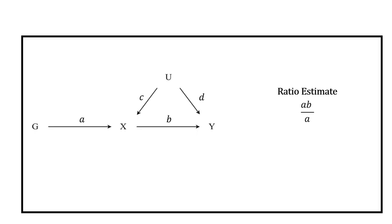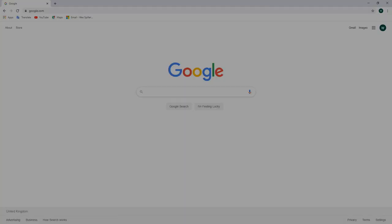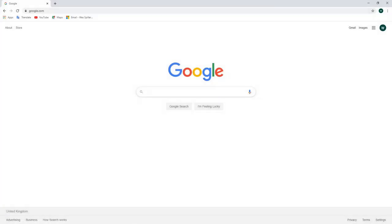Now that we've briefly looked at summary MR, here's what we'll be using to perform our summary MR analyses. For the MRBase online platform, we'll need a Google account, which lets us agree to the terms related to using the online GWAS libraries. We'll also be using R version 3.6 and R Studio version 1.2 in this tutorial. Links to these resources are provided in the video description below. Let's get started using MRBase.